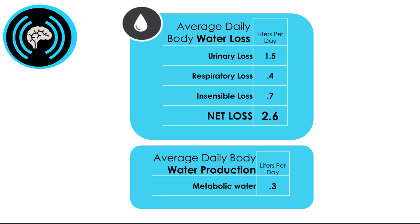We also get a little water produced in metabolism. When we break nutrients down, nutrients are stored with water, and when we break those nutrients down we often release water. About 10% of our daily water needs are actually produced in the body — it's not preformed water that we consume in the diet.